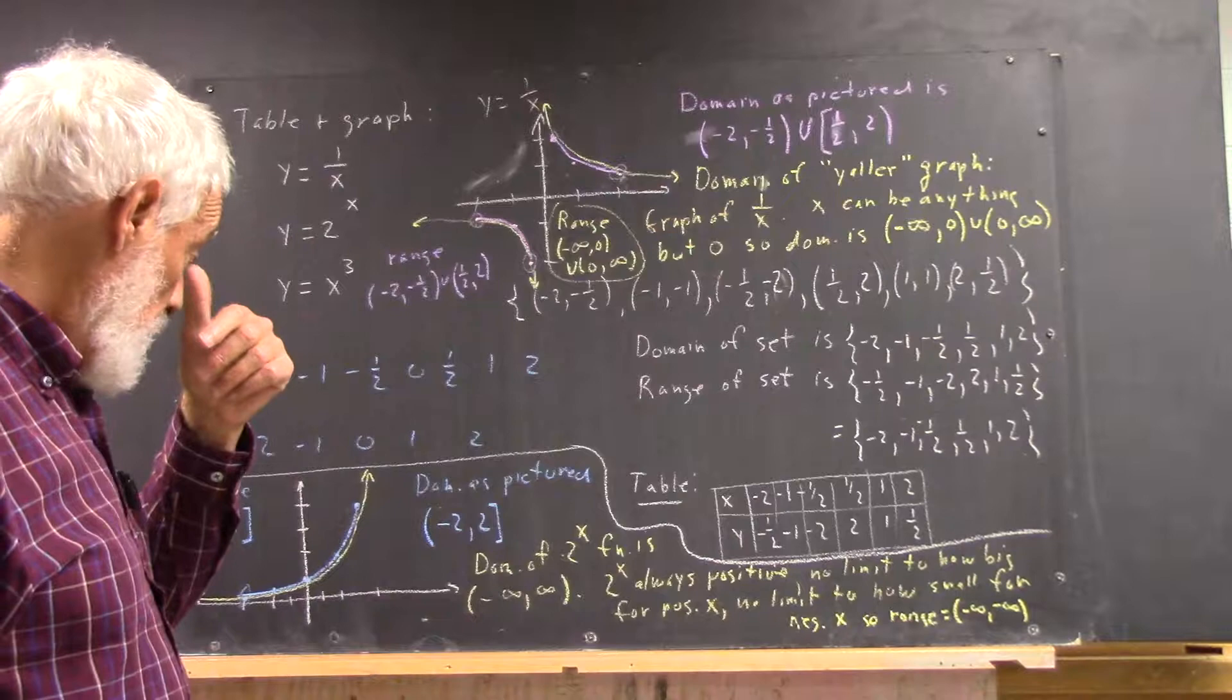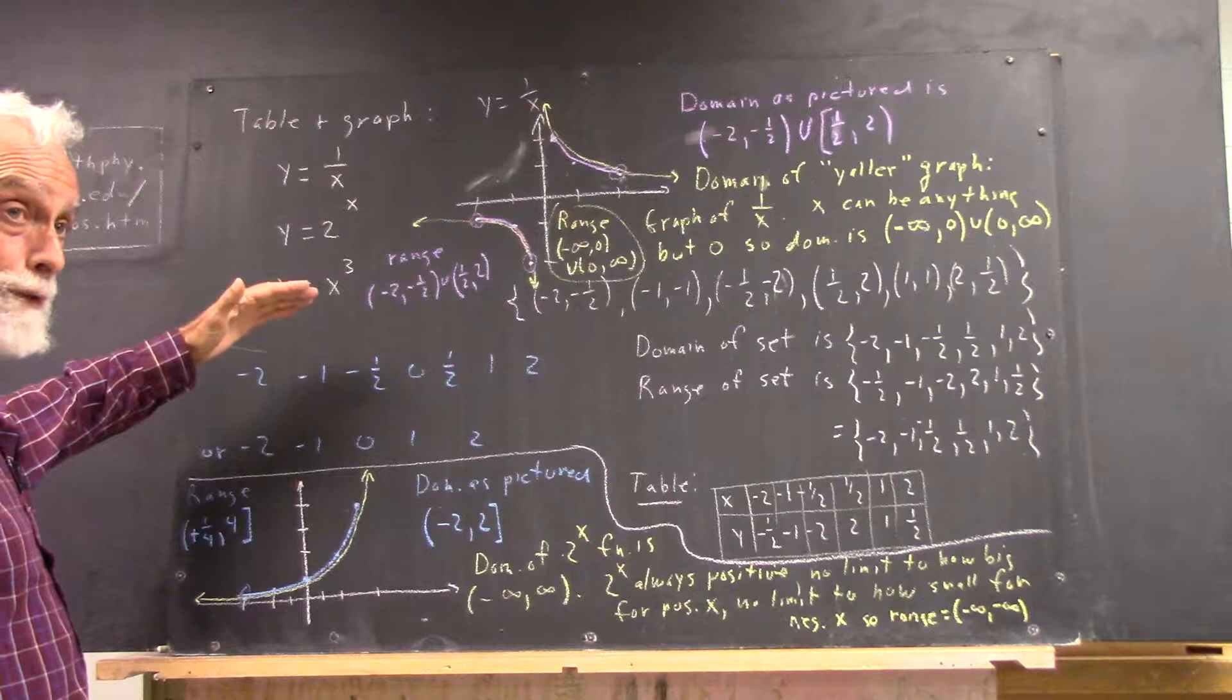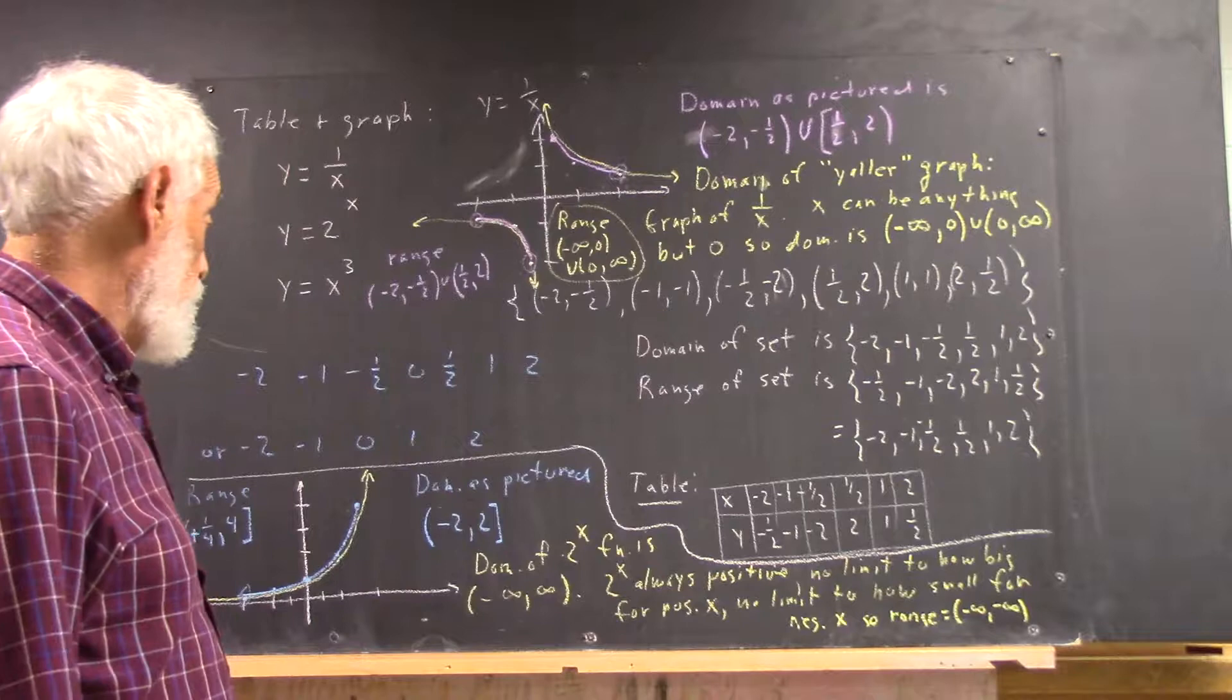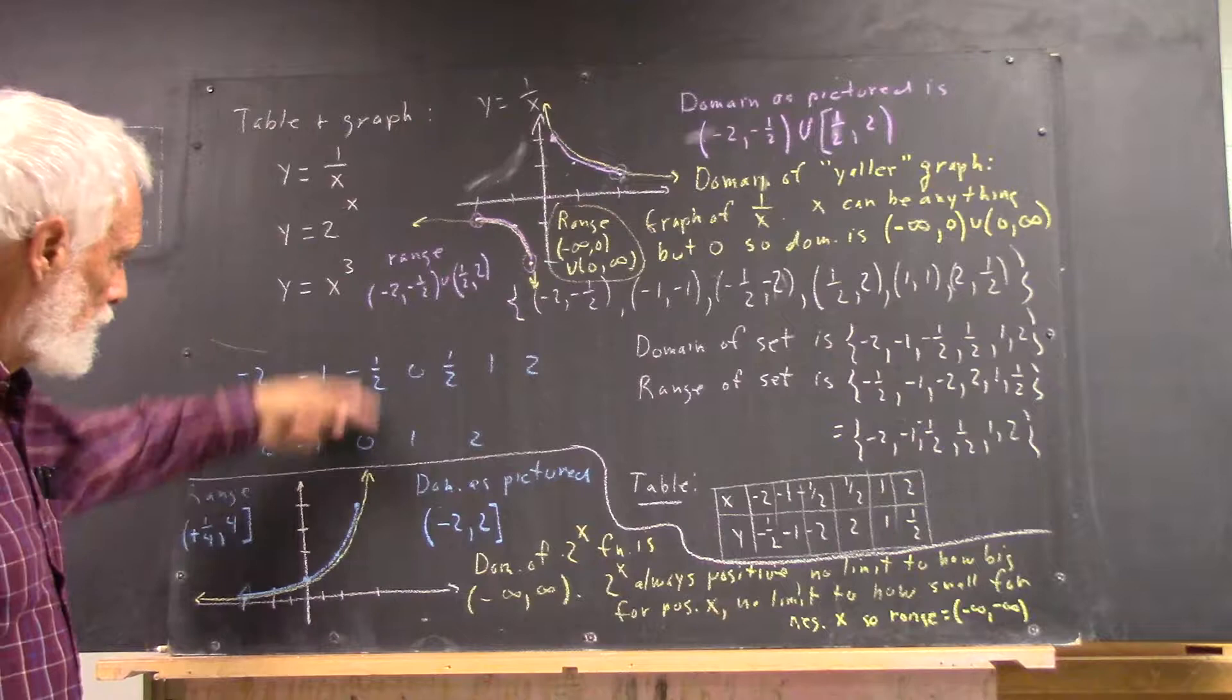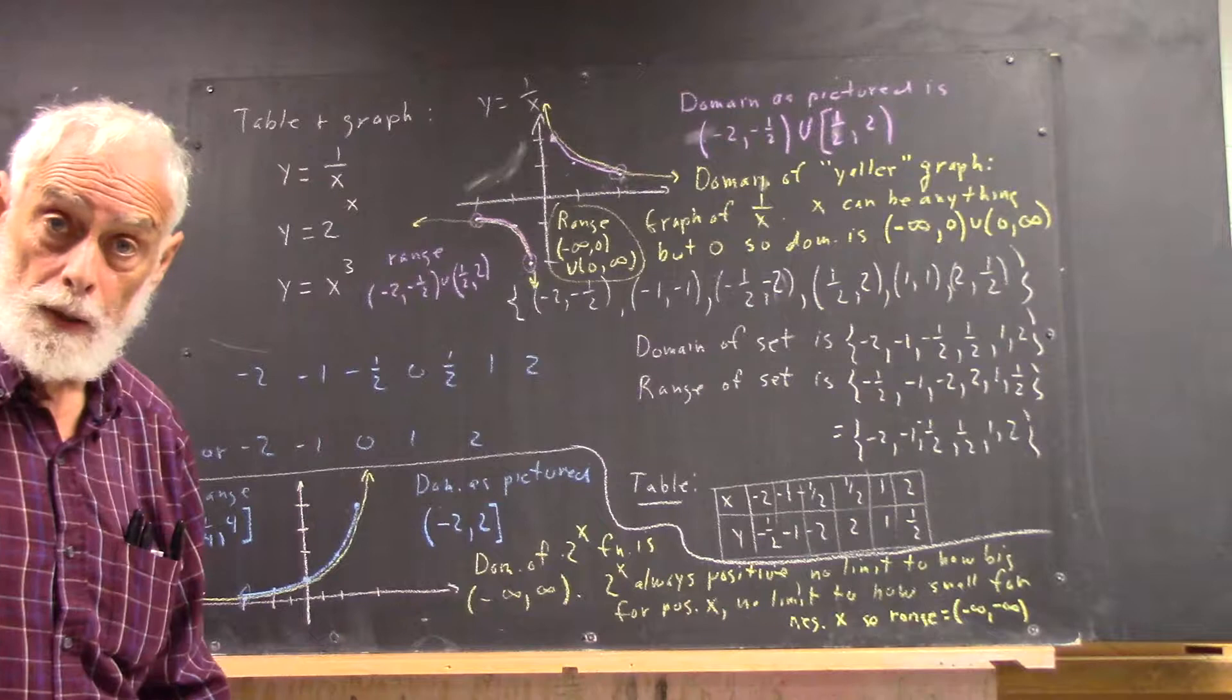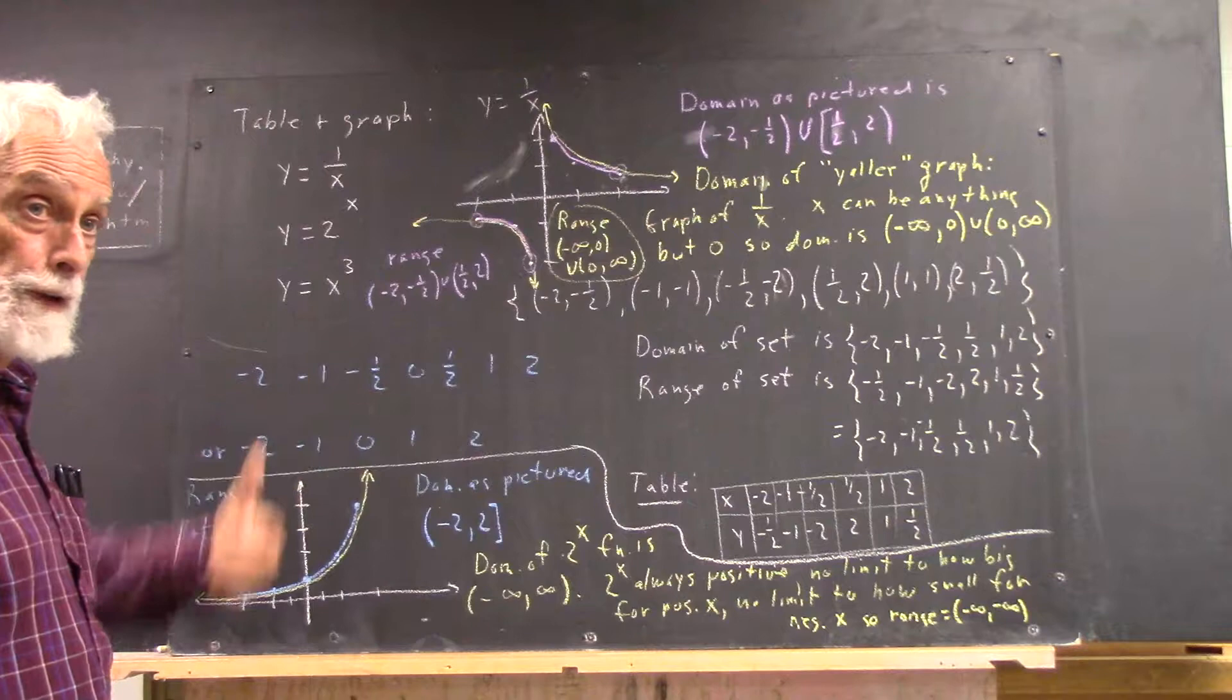Now to get the range, from the graph you can see that the graph appears to stay above the x axis. Well, there's a reason for that. It's because any number, 2 to any number is going to be a positive number. Why is that? Well, if the number is positive, it's obvious. 2 to the 0 is 1 and then it just keeps getting bigger, so those are all positive. For the negative values, it's the reciprocal of all these values. Well, all these values are positive, so their reciprocals are all positive. And they can never be 0. There's no number whose reciprocal is 0.